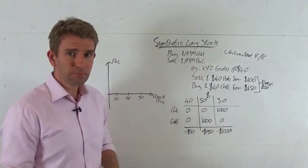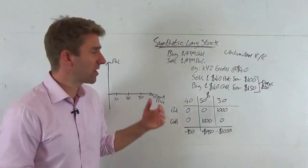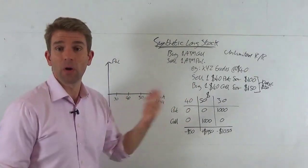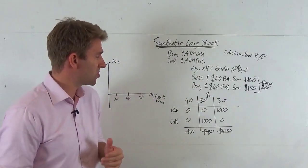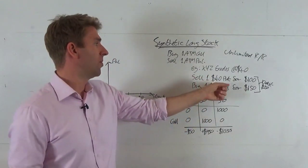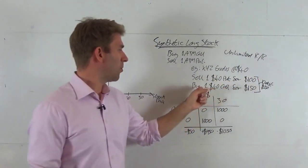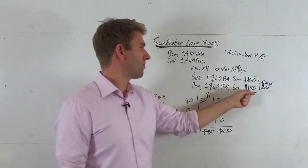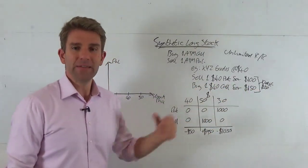Stock XYZ is currently trading at $40 and we think it's going to go higher, so we put a synthetic long stock position on. What we'd have to do is sell a $40 put for $100 and buy a $40 call for $150.